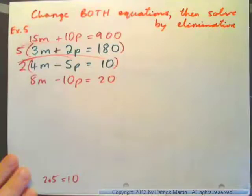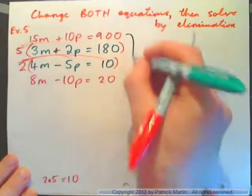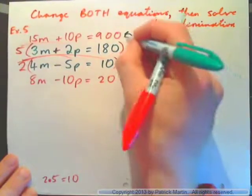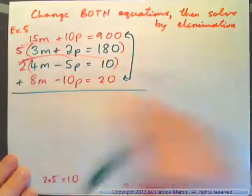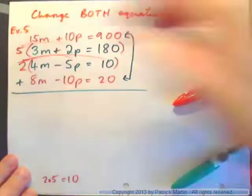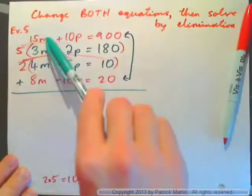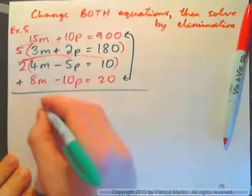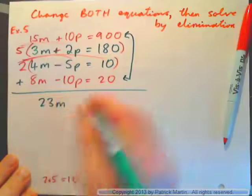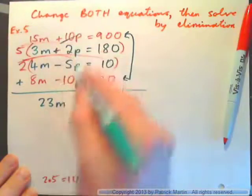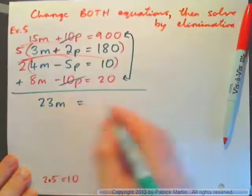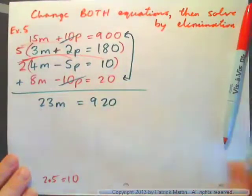And now, if I add both of these equations together, this one and this one, the top and bottom, if I add them together, forget about the middle equations, ignore the middle ones. 15m plus 8m gives 23m. 10p minus 10p gives 0p. And that's equal to 920.